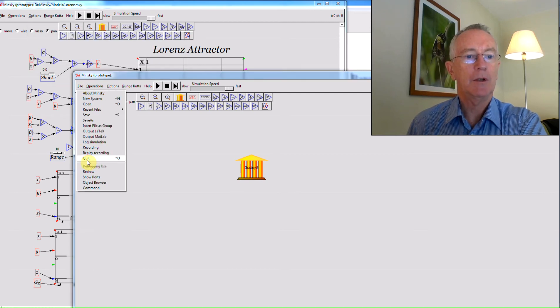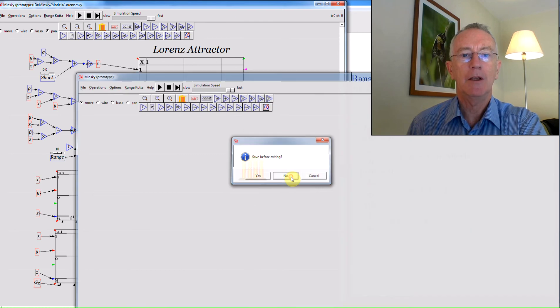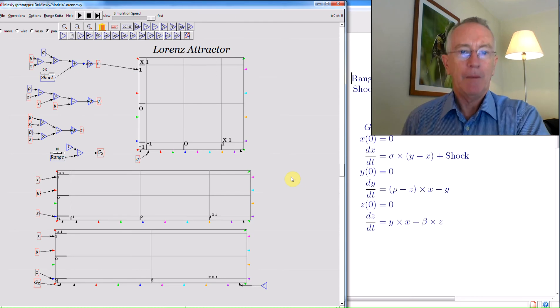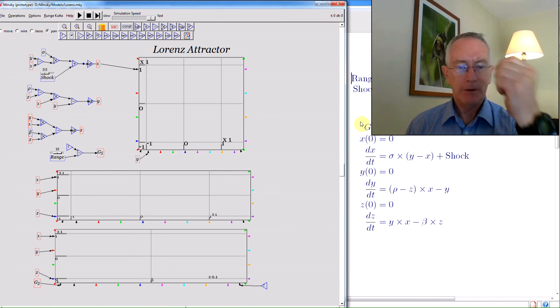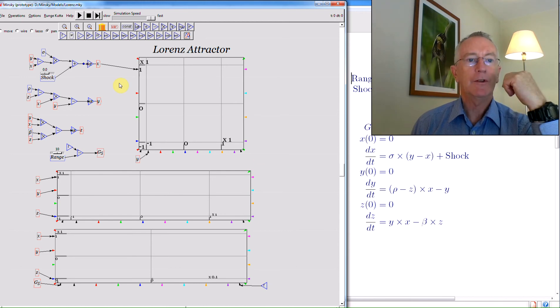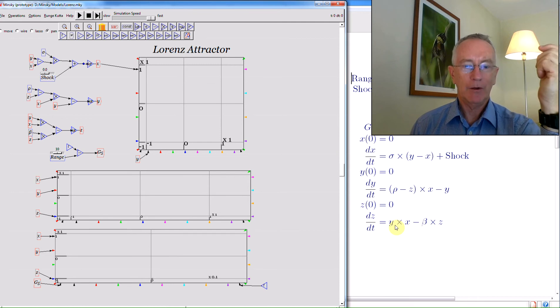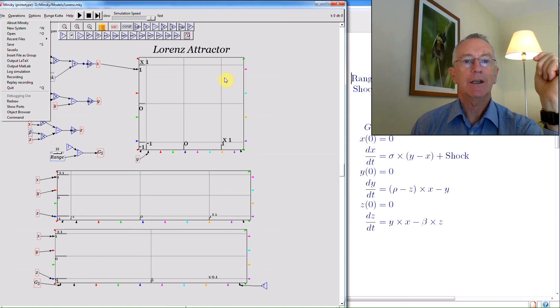But because it also maintains the same paradigm as most systems dynamics programs, with a flowchart to build equations, you can also use it to build models like, for example, the Lorenz Attractor. So what I'm going to show you here, this is a finished model of the Lorenz Attractor. Over this side I've got equations in the attractor, which have been generated by MNSCI itself, by choosing the option here for output LaTeX.